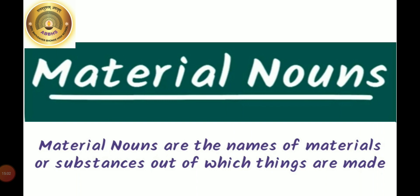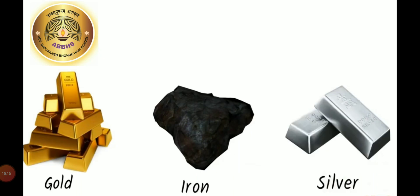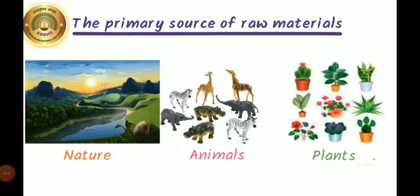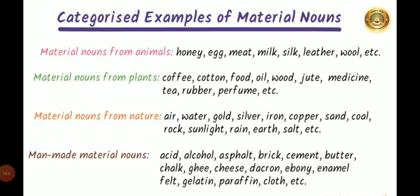Now, material nouns. Material nouns are the names of materials or substances out of which things are made. For example, gold, iron, silver, etc. Material nouns are names given to raw elements or objects which exist in nature or are created by humans using raw materials. The primary sources are nature, animals and plants. Material nouns from animals: honey, egg, meat, milk, silk, leather, wool, etc.